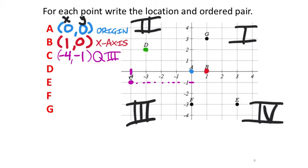Point D — I set up the ordered pair. Following down to the x number line, the x value is negative 3. Going over to the y-axis, the y value is 2. So negative 3, 2 is the location of D, and that's in quadrant 2.